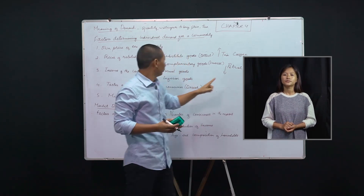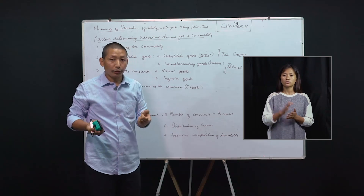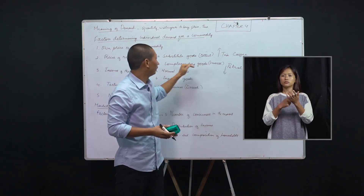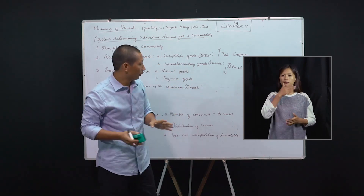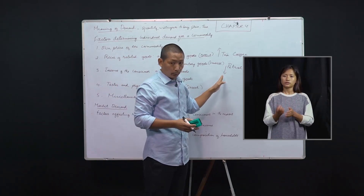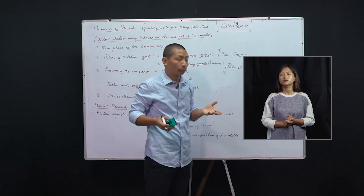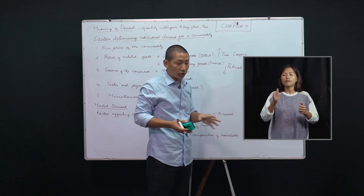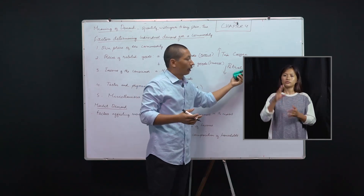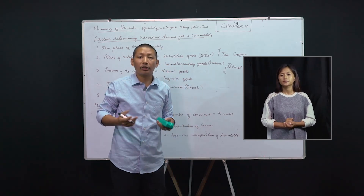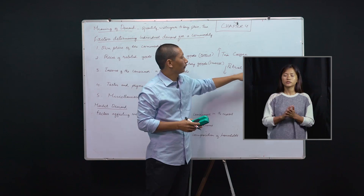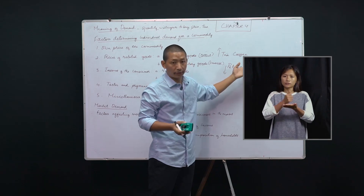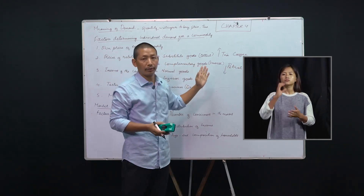Those goods which are required or used jointly are called complementary goods, and there is an inverse relationship among complementary goods. The best example: if prices of petrol fall, it will tempt people to buy more cars; therefore the demand for cars will increase. Petrol is very cheap, so running a car becomes cheaper for customers as well. Therefore, even though the price of the car does not change, because of a change in the price of petrol, the demand for cars will increase. That happens with complementary goods.